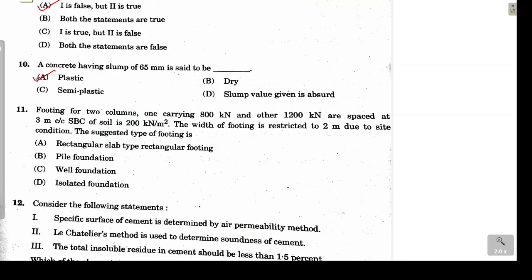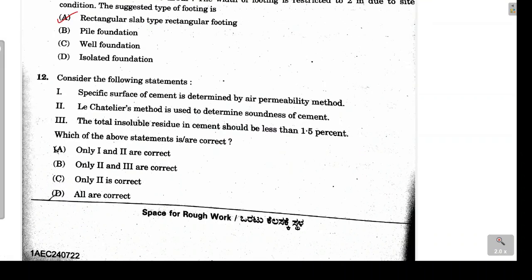Question 11 asks about designing a footing for two columns spaced 3 m center-to-center, with safe bearing capacity of 200 kN/m², and footing width restricted to 2 m. When two columns are closely spaced, we provide either rectangular or trapezoidal combined footing. Looking at the options, option A — rectangular slab type footing — is the correct answer.